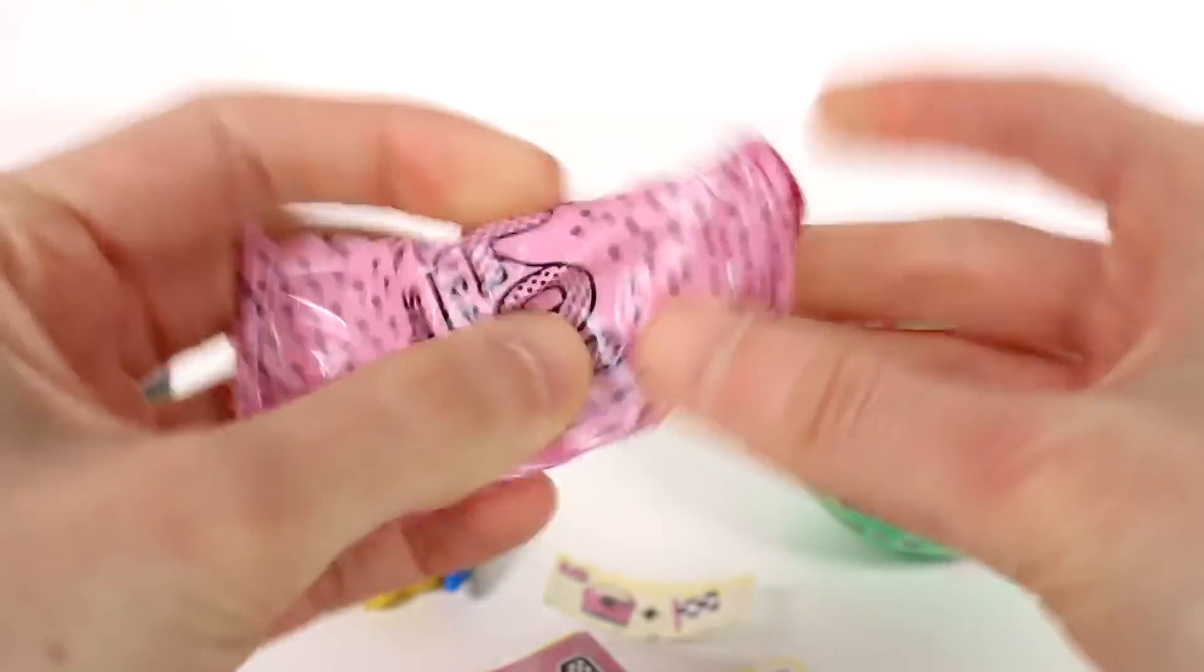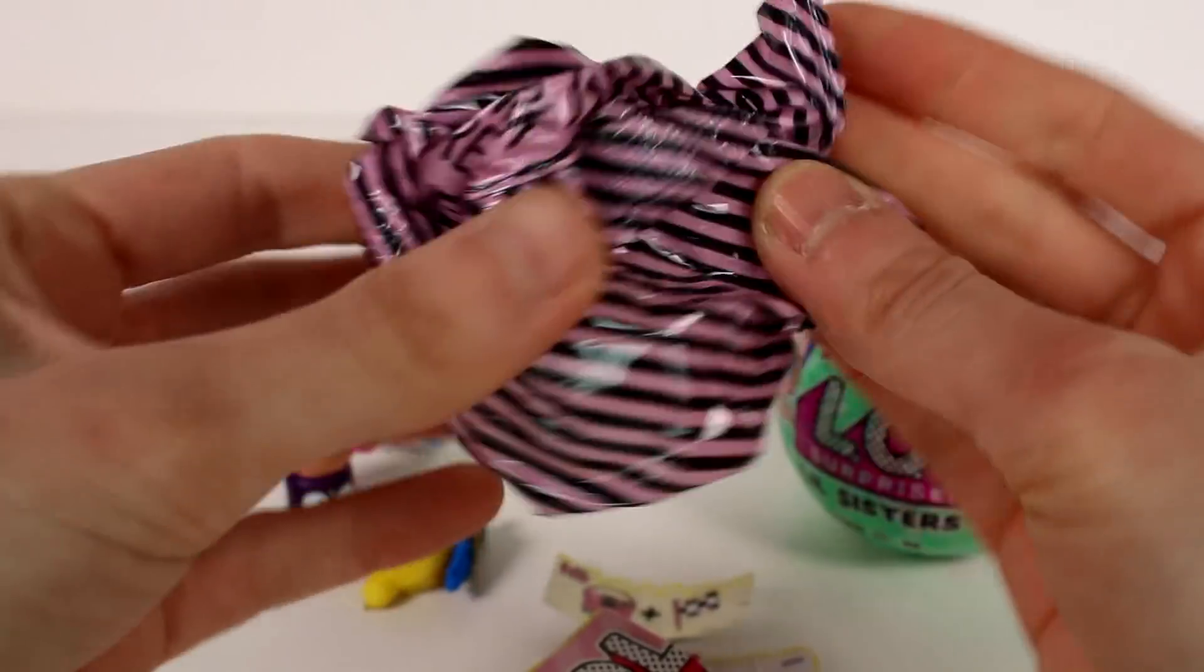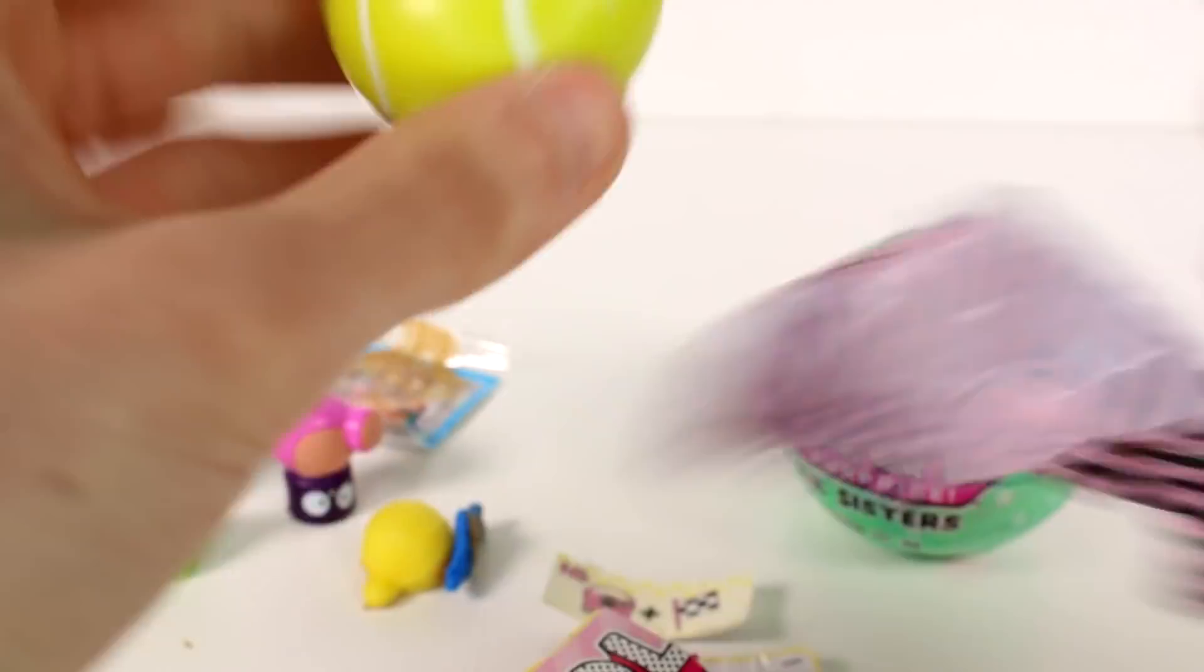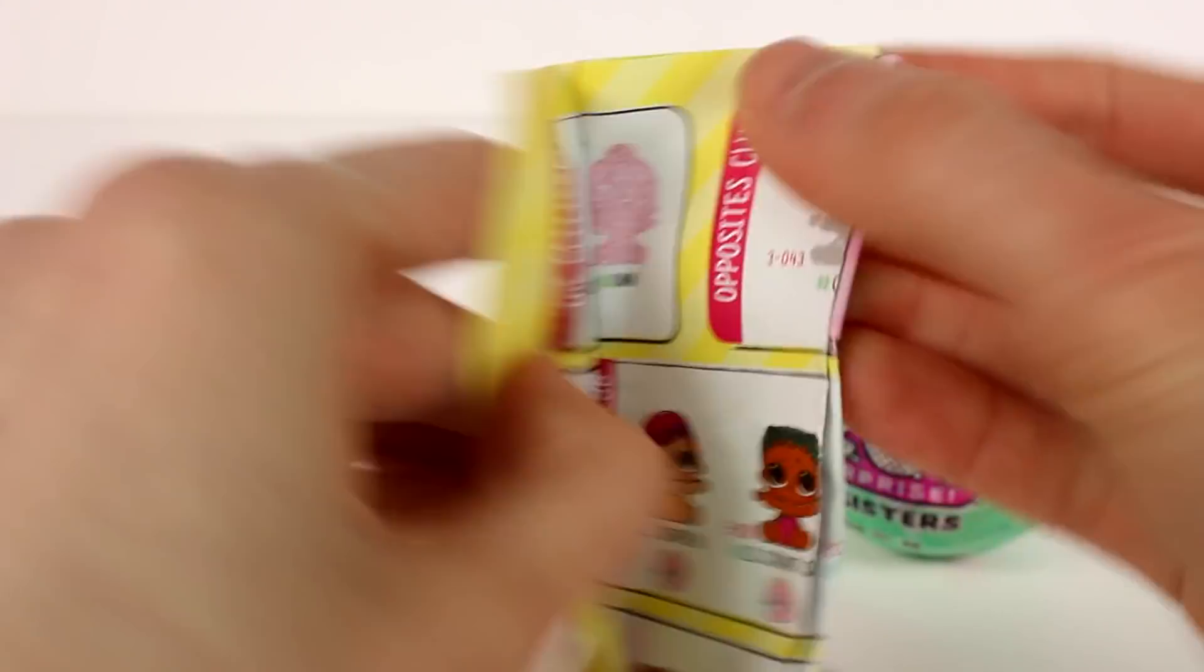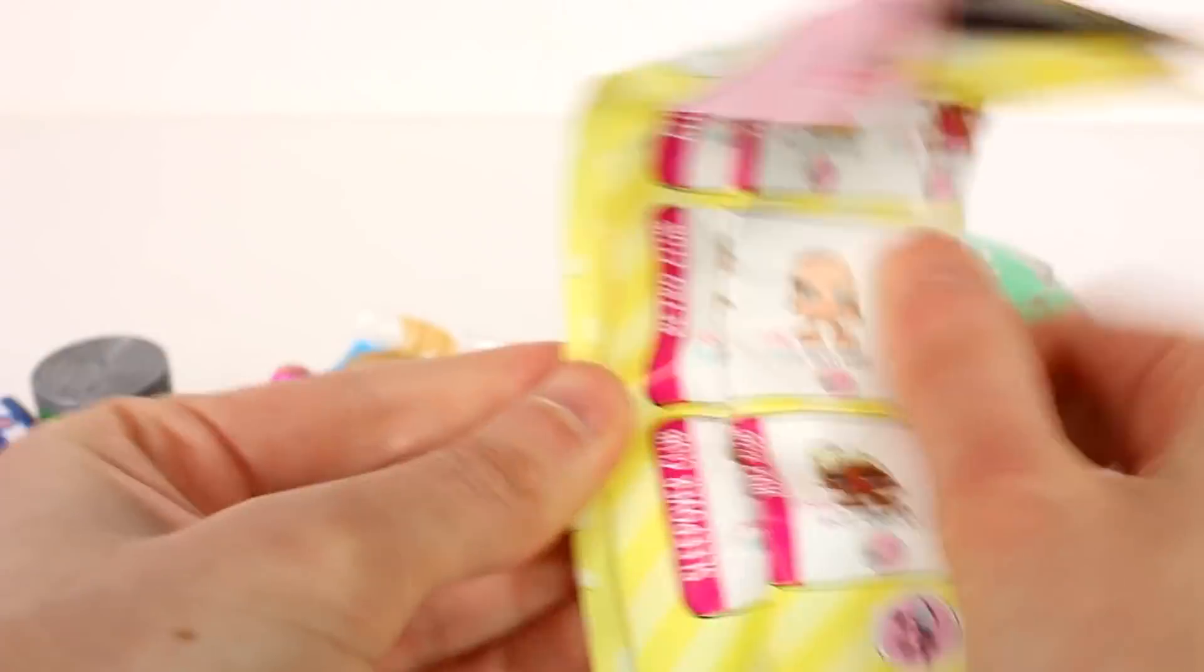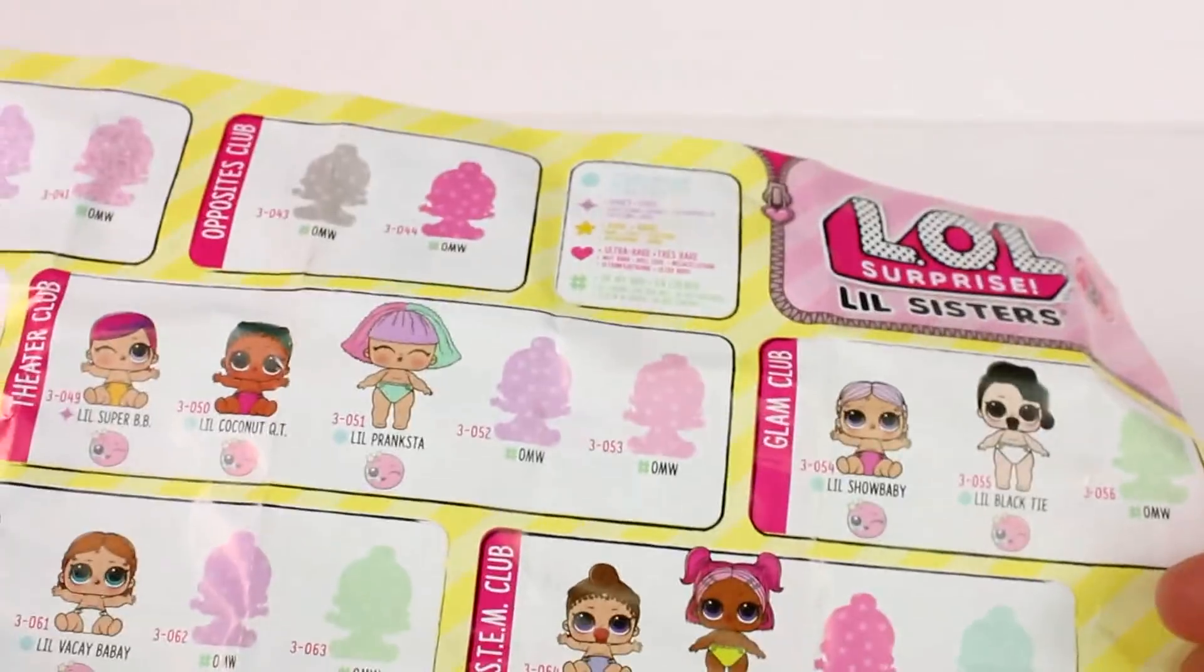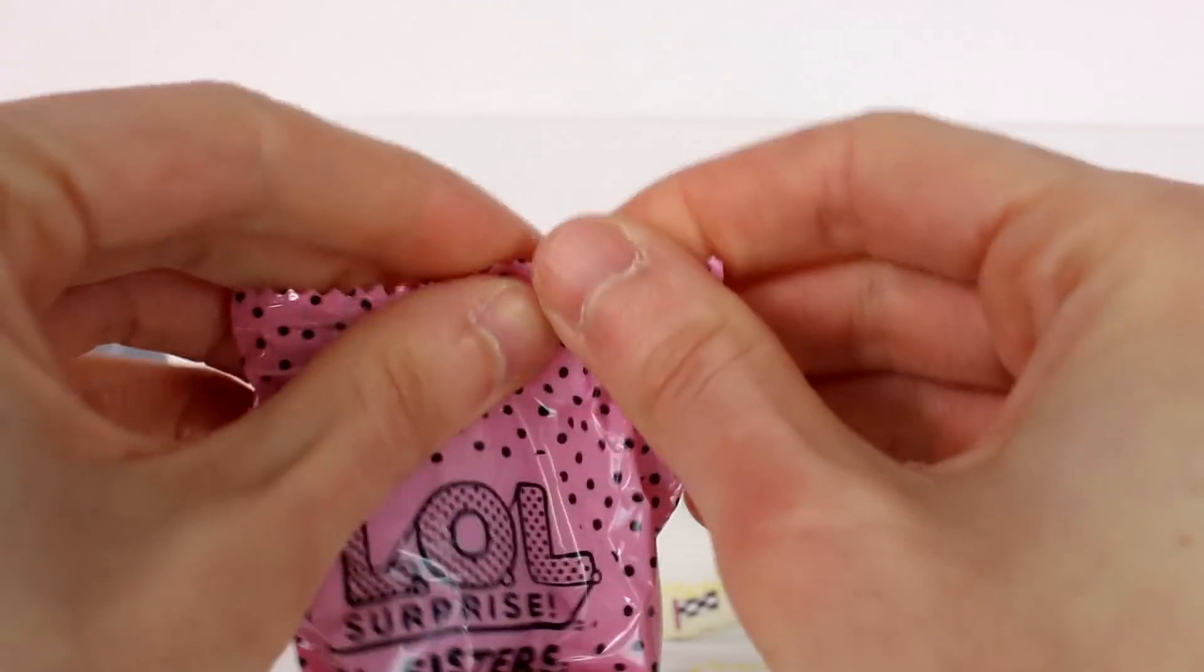So let's open up the accessories. Oh, we got a little tennis racket. And the bag, the matching bag. And then let's go ahead and open this up, this checklist. These are the big sisters on this side. And then here are all of the little sisters. If you guys know which one we got, leave it in the comments down below.